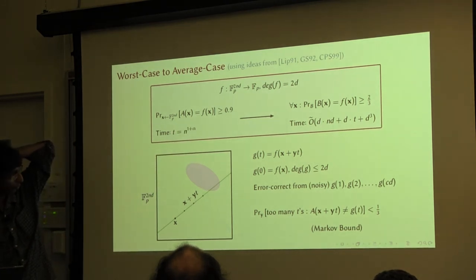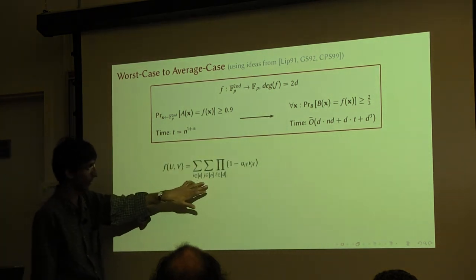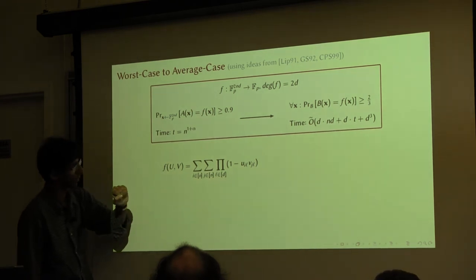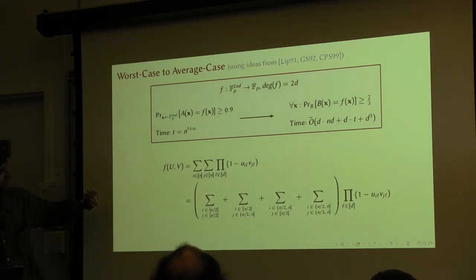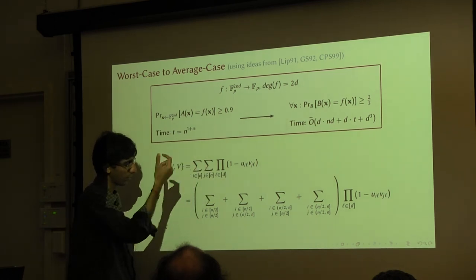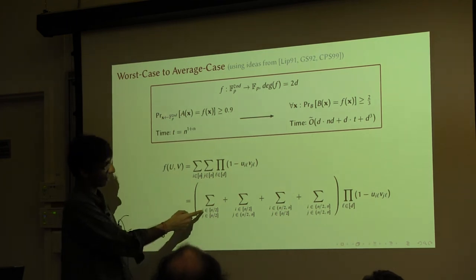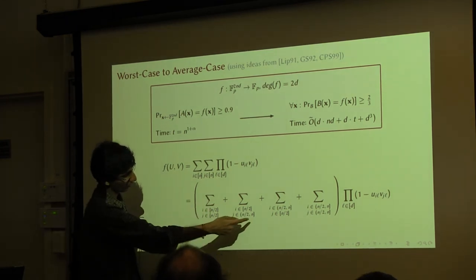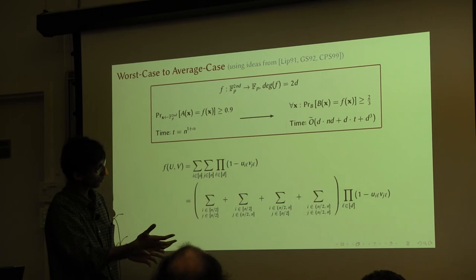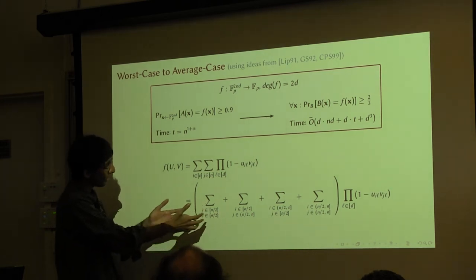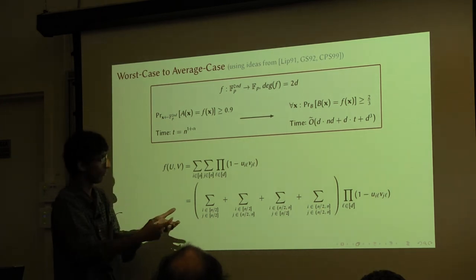If you want to do more, you have to use the properties of our polynomial. The property we are going to use is that you can split these sums as follows. These are sums over n values from 1 to n. We can split this into four sums over n/2 values — one where i and j both go from 1 to n/2, and so on. You can split this into a sum of four different polynomials. The thing to notice is that all of these smaller polynomials are actually the same polynomial as what we started with, just over a smaller number of values.